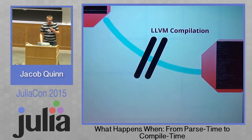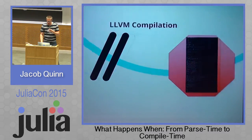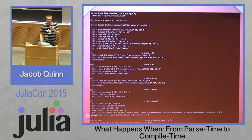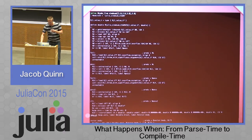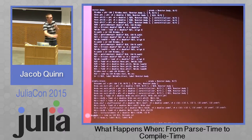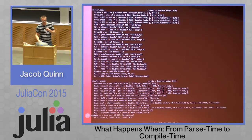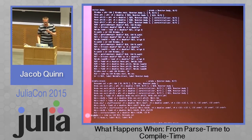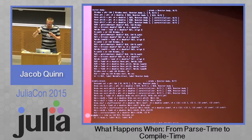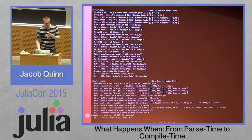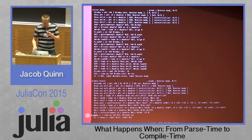Then we have LLVM compilation. We can see the output of that by looking at the @code_llvm macro. Indeed, we are getting vectorization — we can see the vector body in the middle block and see that it's operating on four values at a time. So we can check the output of our SIMD macro that we wanted to get.